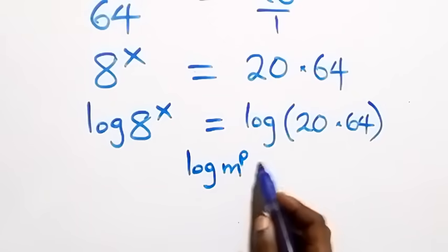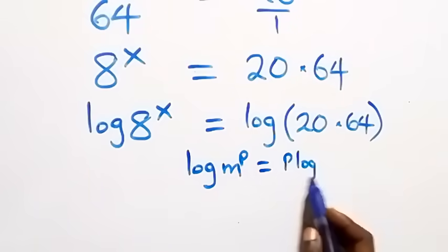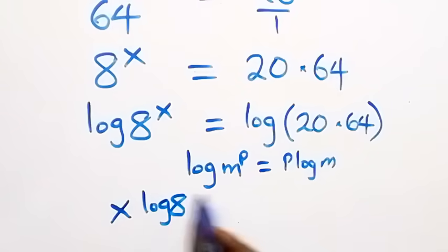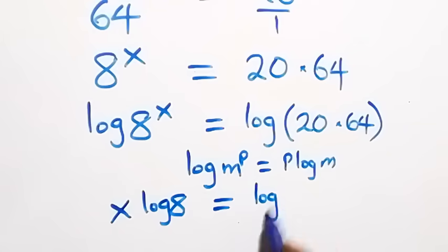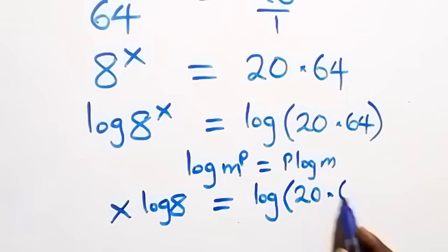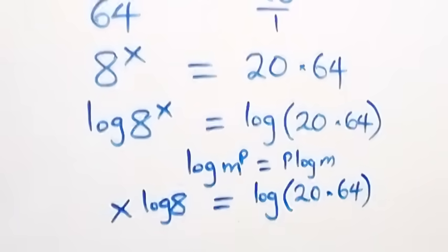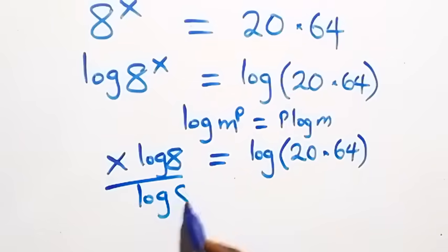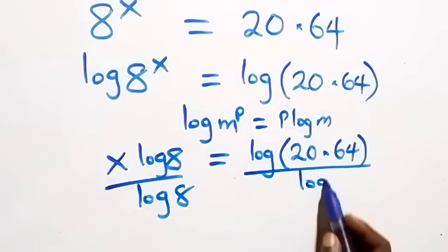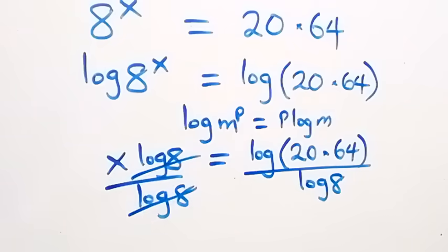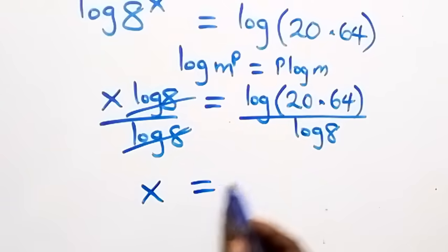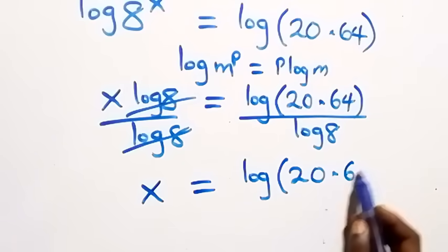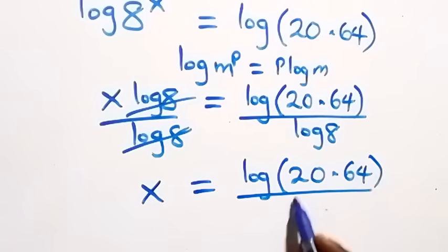Applying the power rule of logarithms — log m raised to power p equals p times log m — what we have becomes x times log 8 equals log of 20 times 64. We then divide both sides by log 8.